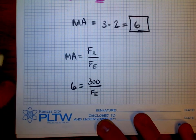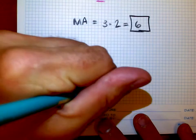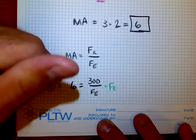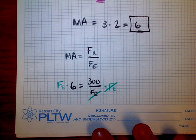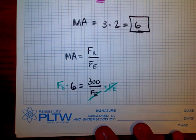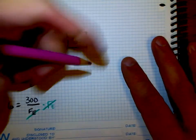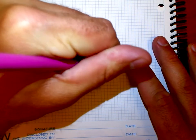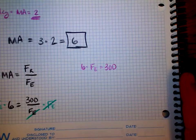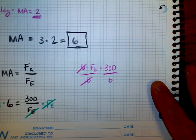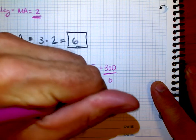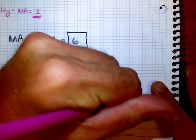I have my effort force on the bottom of the fraction, so I'm going to go ahead and multiply both sides by the effort force and that gets rid of all the fractions. So now I have 6 times FE is equal to 300. I need to divide out the 6 in order to figure out what the effort force is, and that leaves me 300 divided by 6. The effort force is 50 pounds of force that I would need to apply to that pulley.